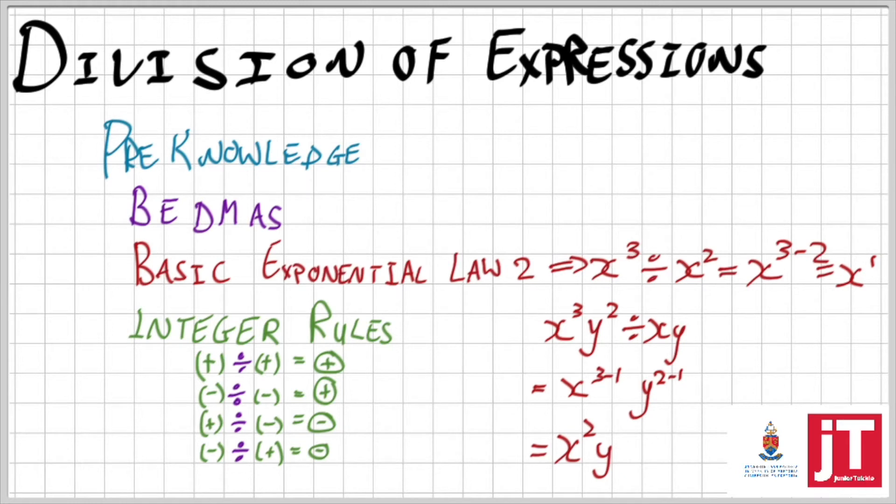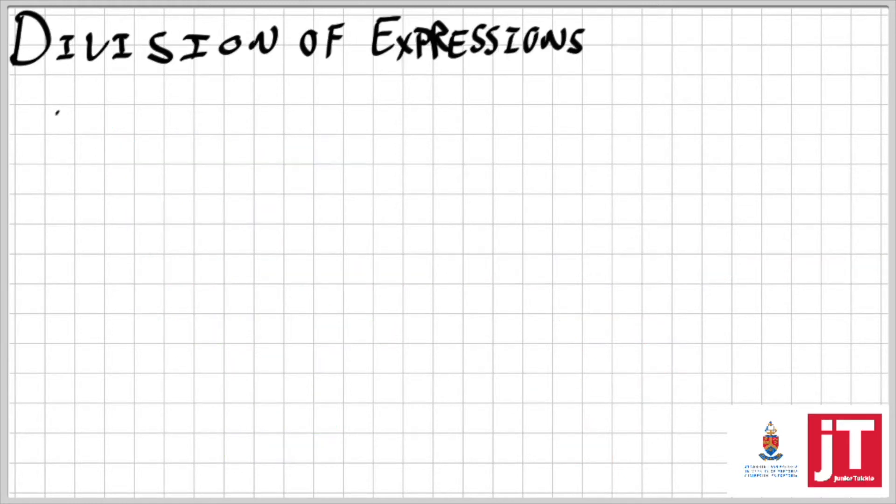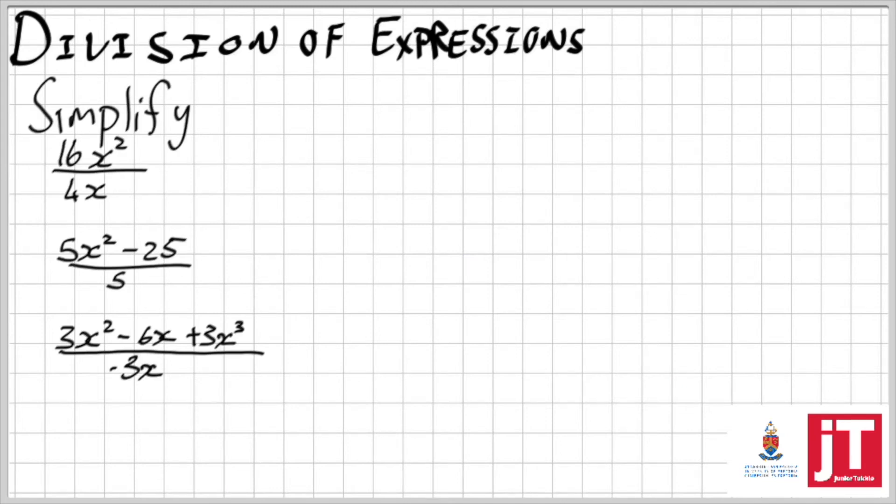So what if I look at these three examples? Simplify 16x squared over 4x. Well first of all I'm going to look what goes into 16 and into 4. Well 4 goes into it, 4 goes into itself once. Let's just show that for the viewers, and into 16, 4 times.